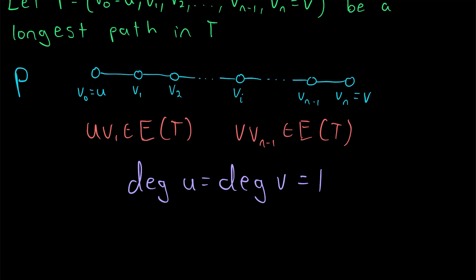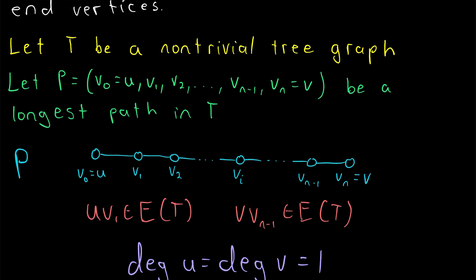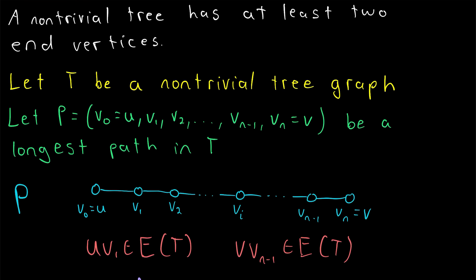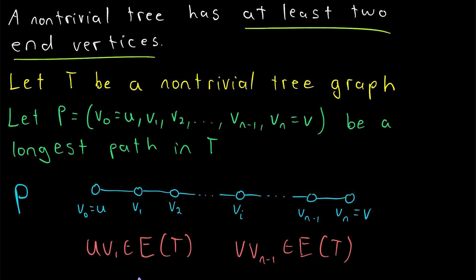And of course, we can't guarantee that there will be any more end vertices because the longest path sometimes is unique, even though it isn't always unique. For example, if we have this tree graph here, of course, we have exactly two end vertices. But we've now proven that's the minimum for a non-trivial tree graph. Any non-trivial tree graph has to have at least two end vertices.